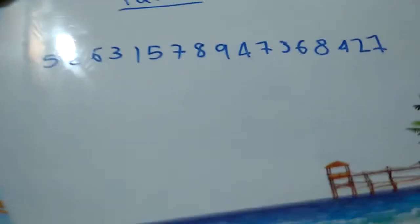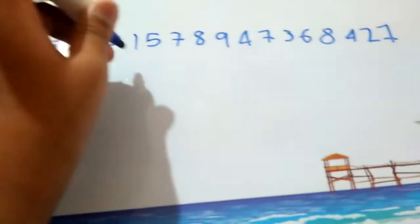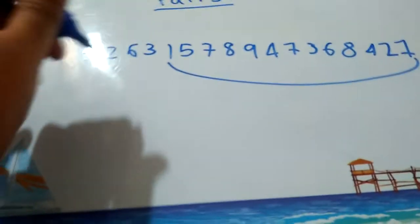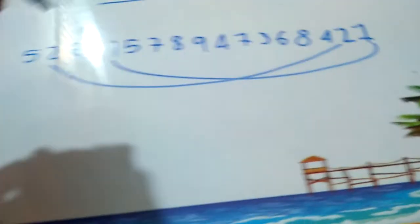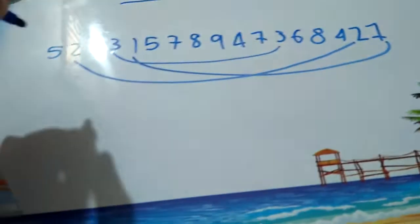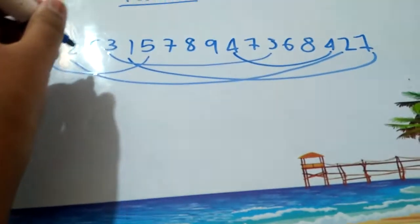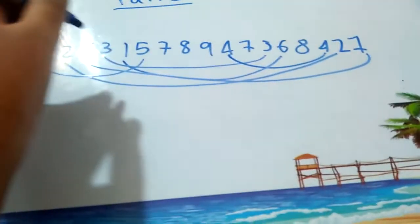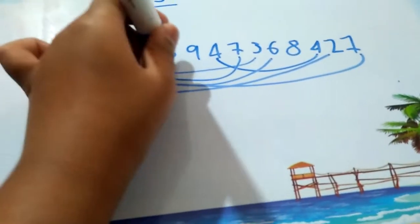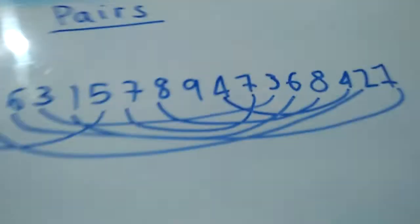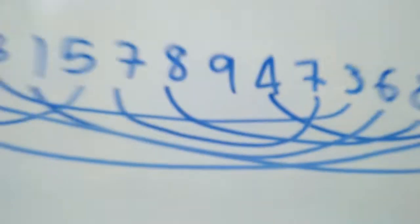Now let's see if they have pairs. Well, one has a pair, two has a pair, three has a pair, four has a pair, five has a pair, six has a pair, seven has a pair, eight has a pair. Except this nine, nine does not have a pair.